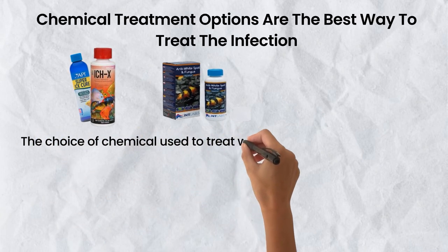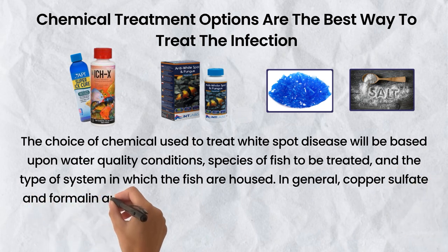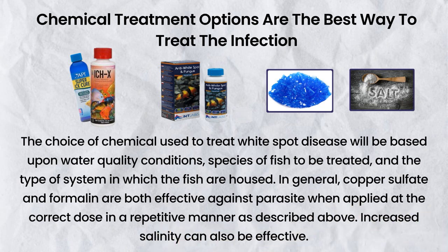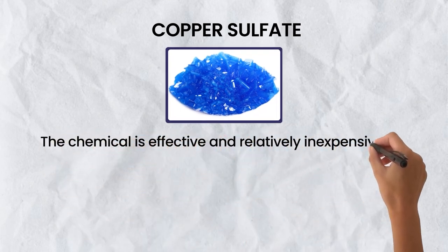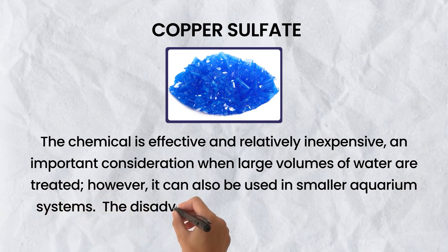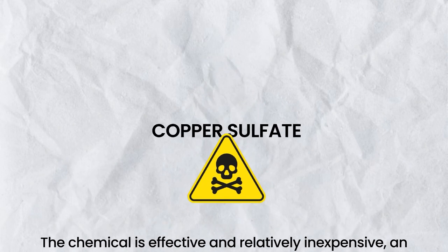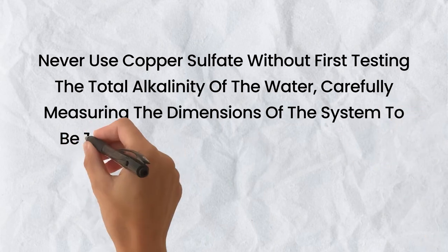Chemical treatment is the best way to treat the infection. The choice of chemical depends on water quality conditions, species of fish, and the type of system. Copper sulfate and formalin are both effective against the parasite when applied at the correct dose in a repetitive manner. Increased salinity can also be effective. Copper sulfate is effective and relatively inexpensive, but it is extremely toxic, particularly in water of low alkalinity. Never use copper sulfate without first testing the total alkalinity, carefully measuring the system dimensions, and weighing the amount of chemical to be applied.